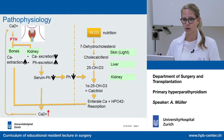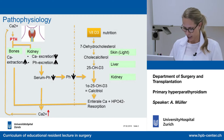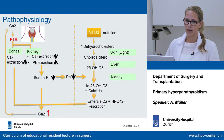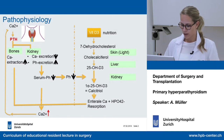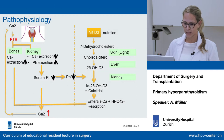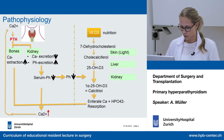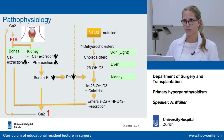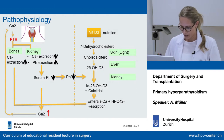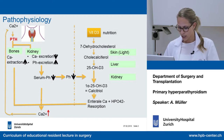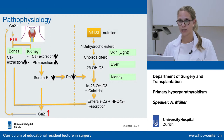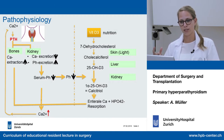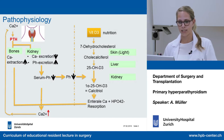First, to understand everything, you need to understand the pathophysiology. If the calcium in the blood is low, the parathyroid gland is stimulated and there is an expression of PTH, the parathyroid hormone, which activates osteoclasts in the bone, causing demineralization of the bone and calcium extraction. At the same time, PTH also influences the kidney by reabsorbing calcium and extracting phosphate. When phosphate in the serum is low, this activates vitamin D.